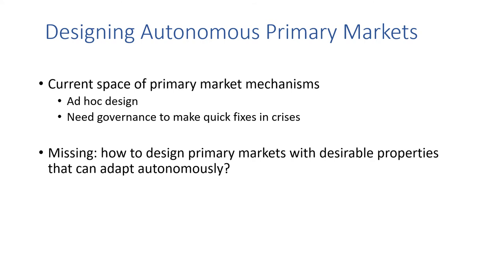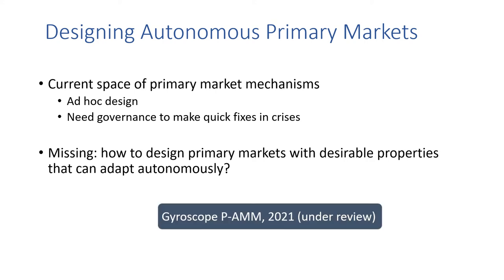This motivates our work on designing autonomous primary markets. The current space of primary market mechanisms is fairly ad hoc and often relies on governance processes to make quick fixes in a crisis — changing parameters to change the implicit primary market curve shape. What is missing currently is how to design primary markets with desired properties from the ground up, from first principles, that can adapt autonomously. This is what we've been doing in our Gyroscope PMM paper.